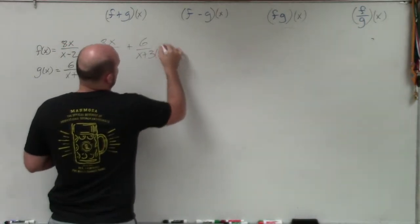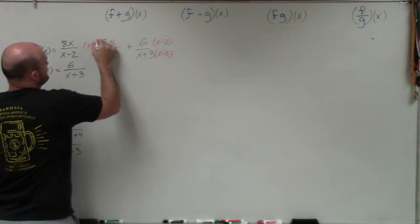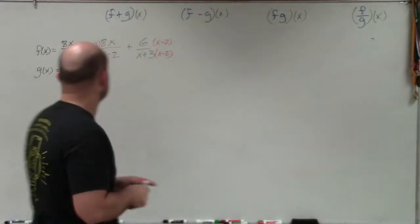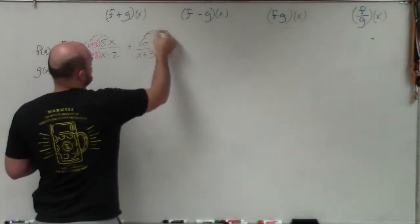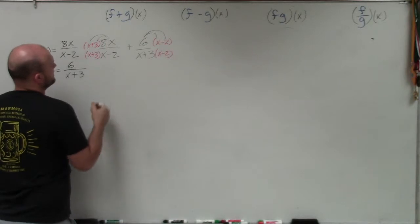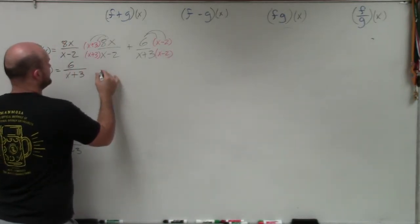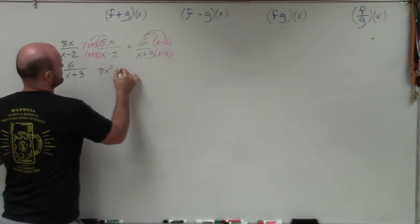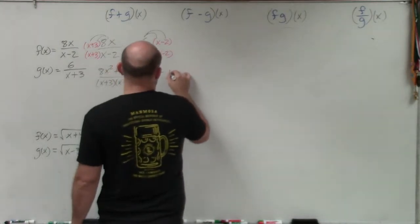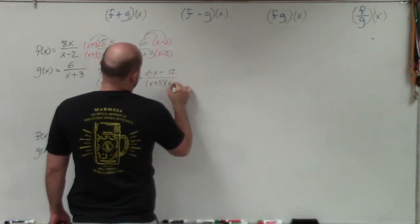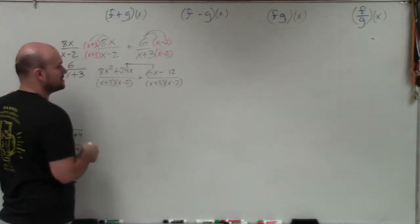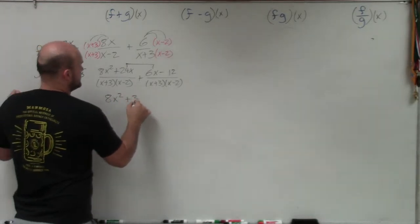I'll multiply x plus 3 on the top and bottom of the first fraction, and x minus 2 on the top and bottom of the second fraction. Remember, multiplying on top and bottom produces equivalent fractions. Now I apply the distributive property, giving me 8x squared plus 24x over x plus 3 times x minus 2, plus 6x minus 12 over x plus 3 times x minus 2. Now that the denominators are the same, I add the numerators. The only terms I can combine are the middle two, giving a final answer of 8x squared plus 30x minus 12.